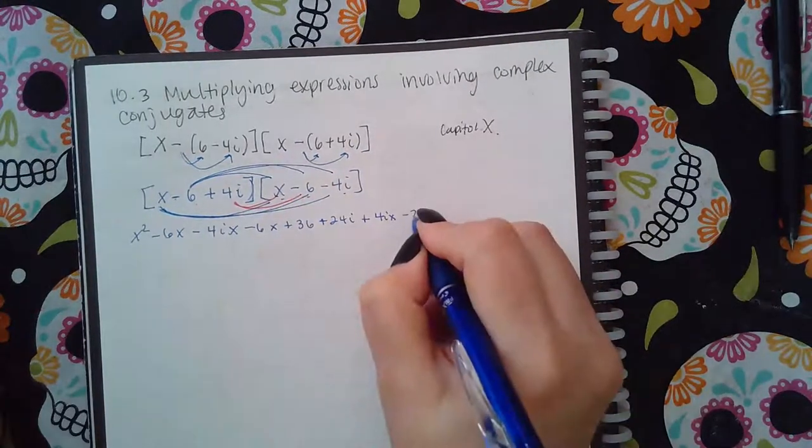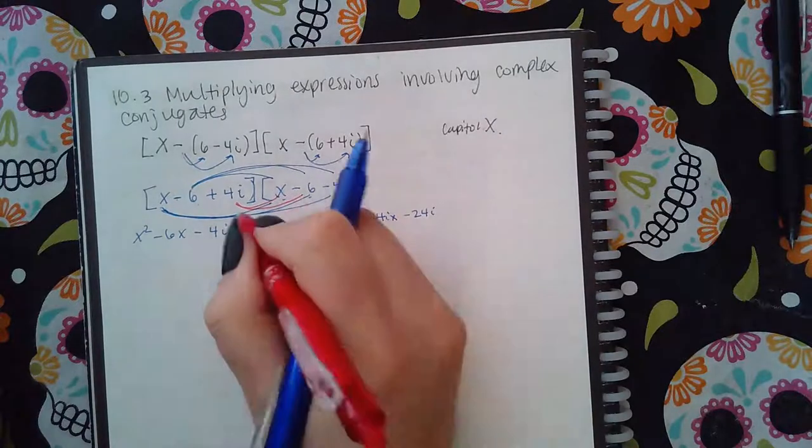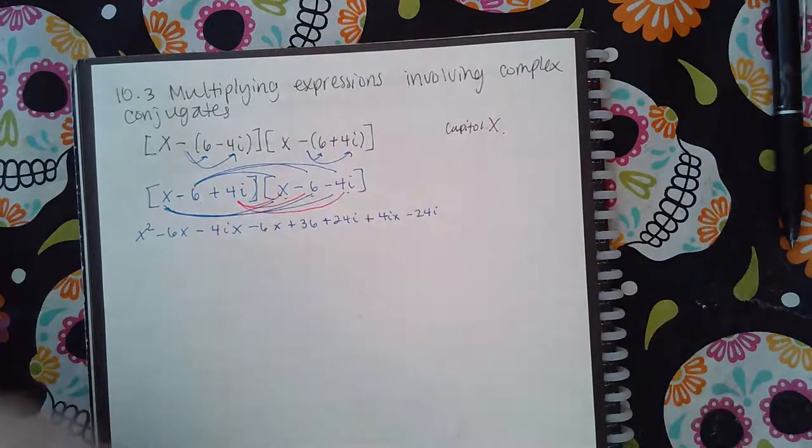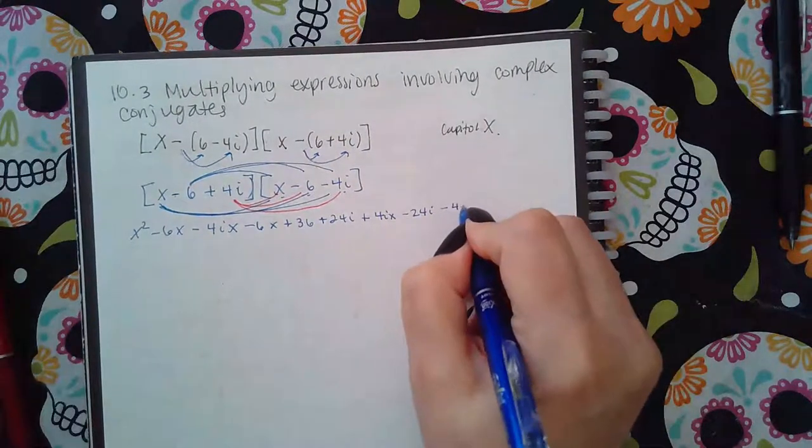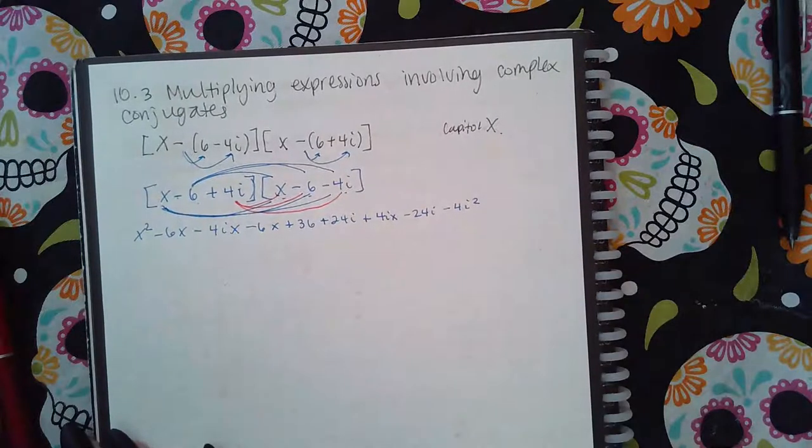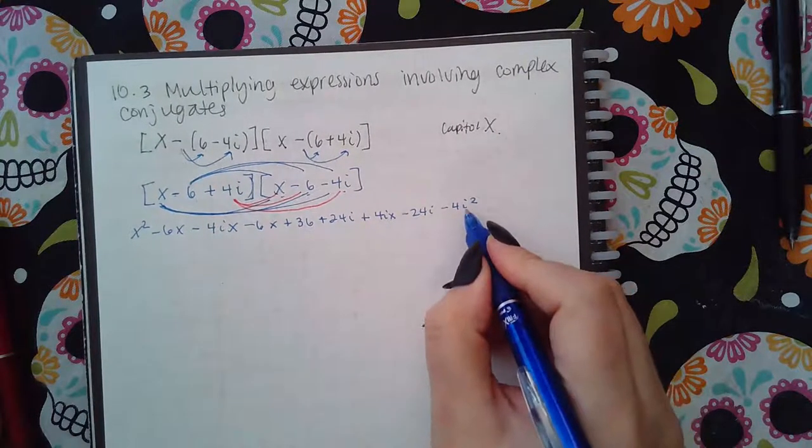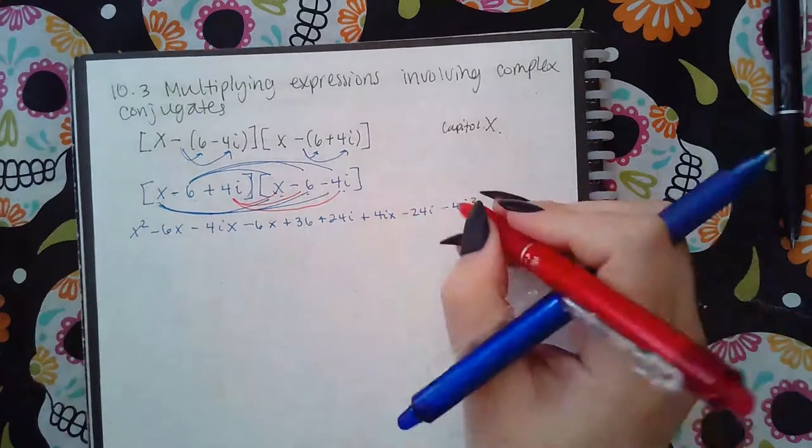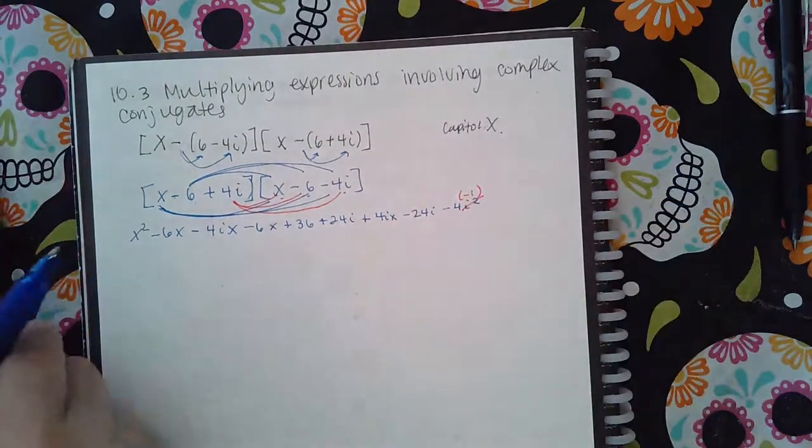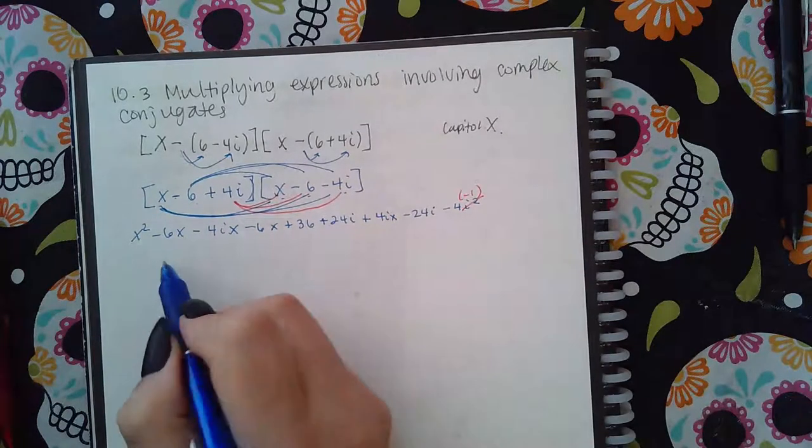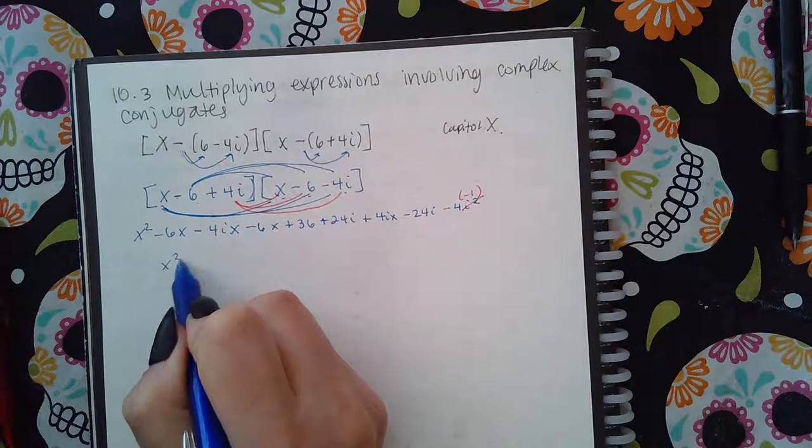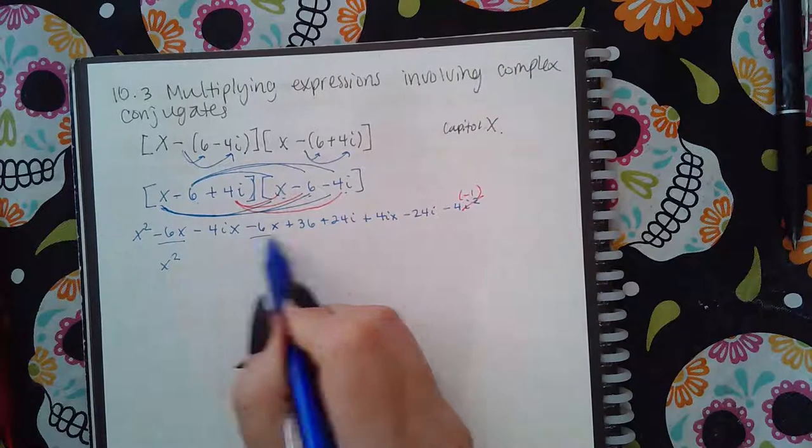Then negative 24i and then the last one negative 4i squared. Now one thing you need to remember is that i squared is just a negative 1. So really this is x squared and I'm gonna put my x's together.